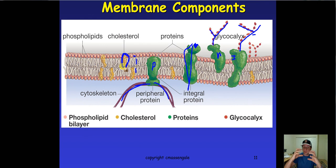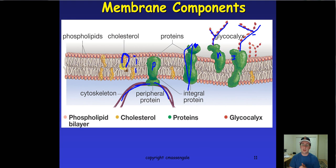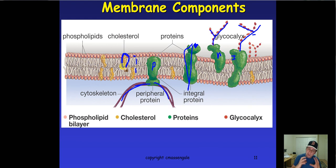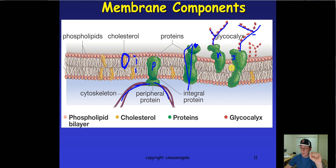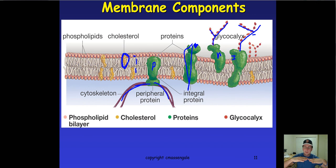You also have cholesterol molecules, which give fluidity to the membrane and allow it to be more fluid without losing its integrity. Animals in very cold environments have more cholesterol in their membranes to prevent the cells from freezing, while animals in warm environments have less. Remember that cholesterol is secreted by the smooth endoplasmic reticulum, the membrane proteins are secreted by the rough ER, and the carbohydrates are also processed through the smooth ER. Everything is built inside the cell and packaged through the Golgi apparatus to reach the membrane.